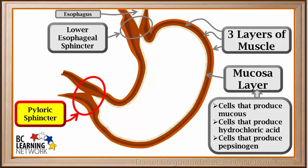There is another sphincter at the bottom of the stomach called the pyloric sphincter. This opens and closes to control the passage of partially digested food from the stomach to the small intestine. We see that it is closed here.